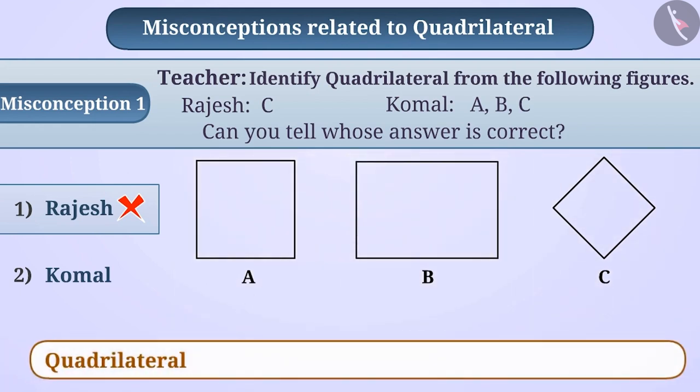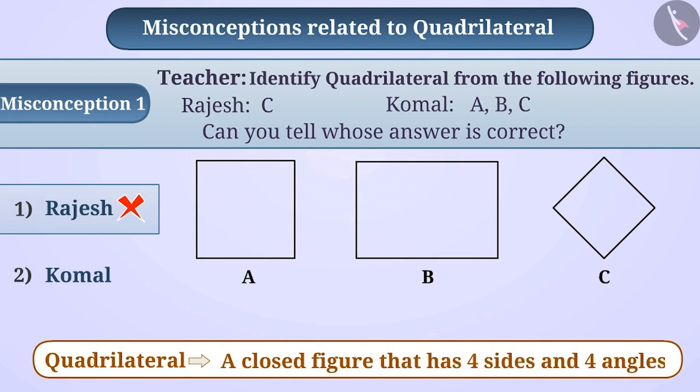The correct understanding is that a quadrilateral means a closed figure with four sides and four angles. The three figures shown here are closed figures with four sides and four angles. So all the figures are quadrilaterals.